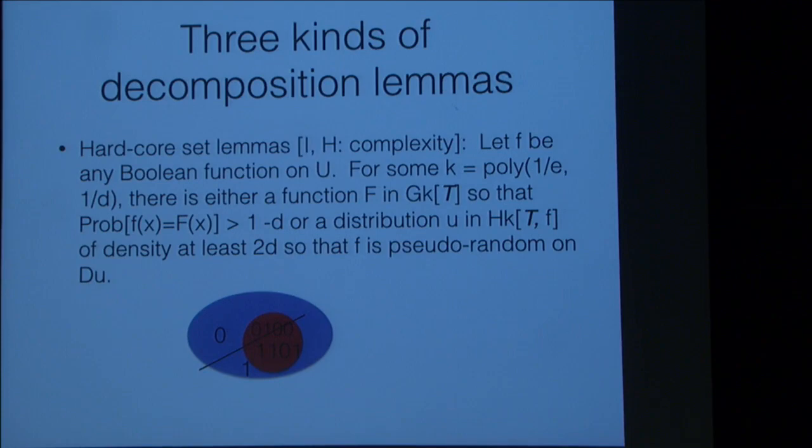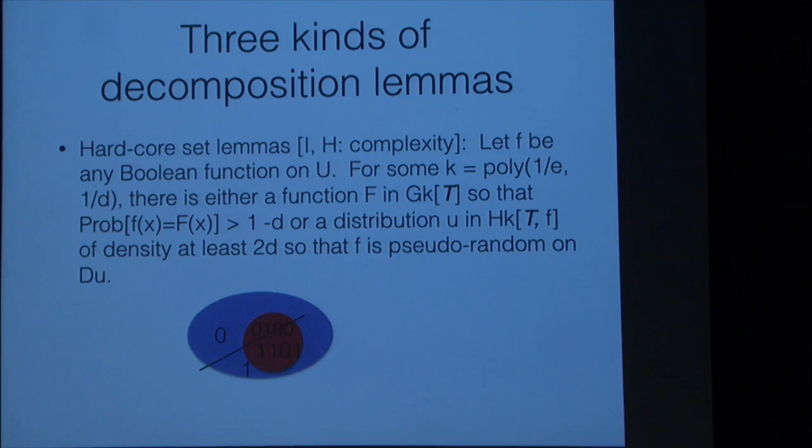One way to be pseudo-dense is to be actually dense, or dense in a distribution that's actually dense within a sub-distribution that looks like the uniform distribution as far as testing in T goes. There are three kinds of decomposition of an object into a structured part and a random part across different areas, and it will turn out that these three kinds are all very related to each other.